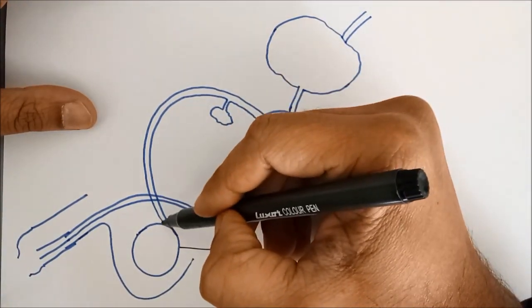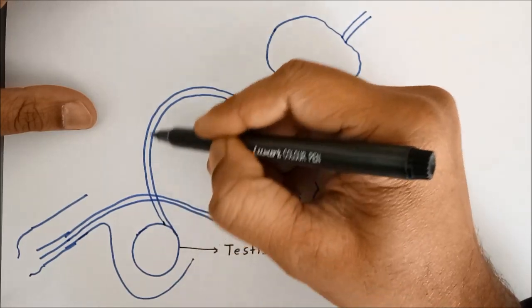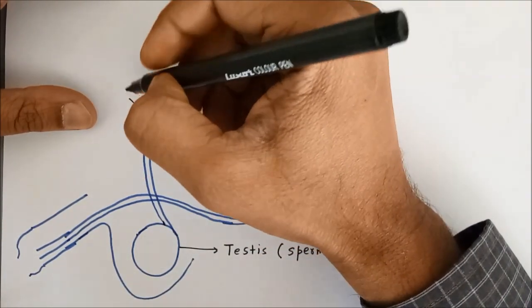This long pipe that originates from the testes is called vas deferens.